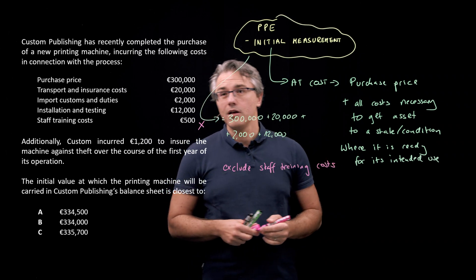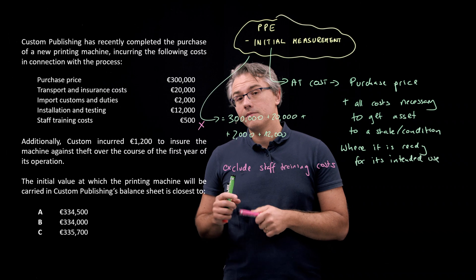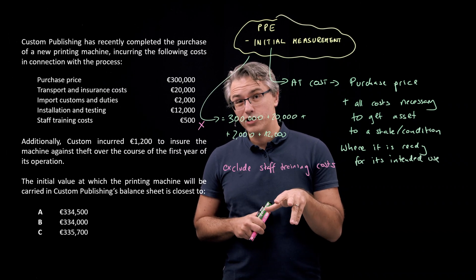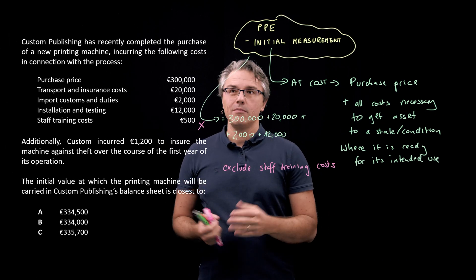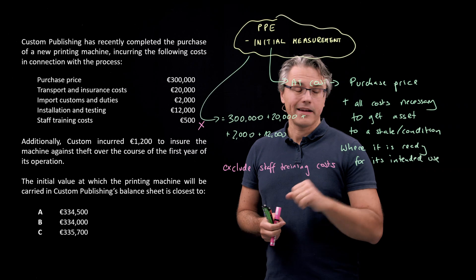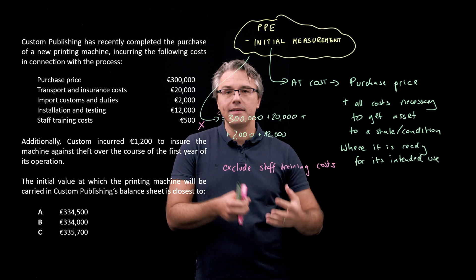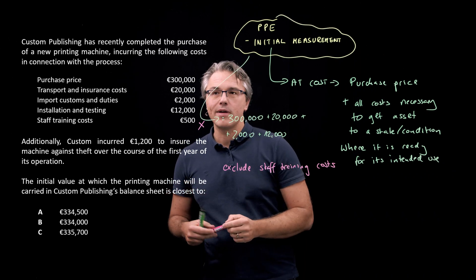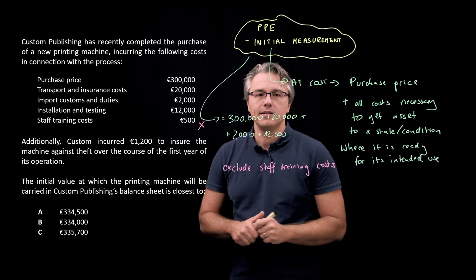And also, we should be excluding the fact that the company incurred some additional costs to insure the machine, but not to insure the transport of the machine to the company, but to insure it against theft for the next year. That has nothing to do with getting the asset to a place, a state, a condition where it's ready for intended use. So basically, we stop at these costs.